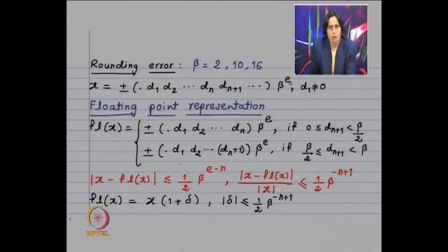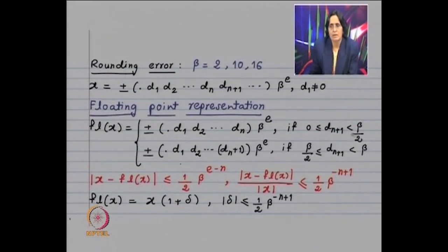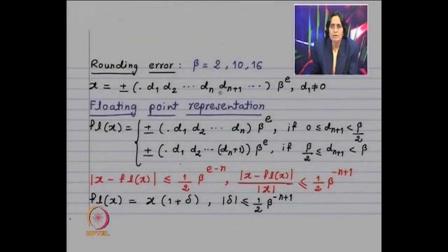The floating point representation is: since we have only a finite number of digits available on a computer, you look at the value of d_{n+1}. When the base is beta, all these digits are going to lie between 0 and beta, strictly less than beta. If d_{n+1} is less than beta/2, then one writes this as ±0.d₁d₂...dₙ × βᵉ. If d_{n+1} lies between beta/2 and beta, then one increases the value of dₙ to dₙ+1. This is the process of rounding off.